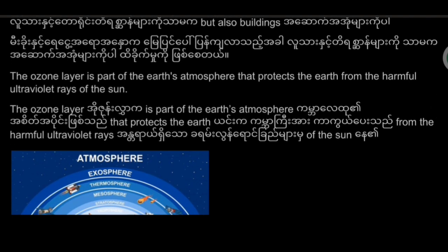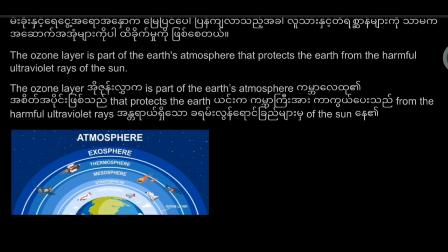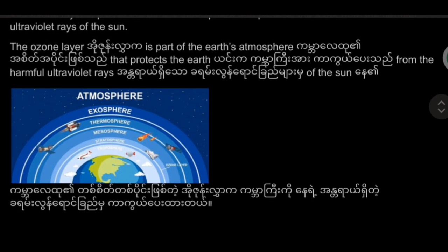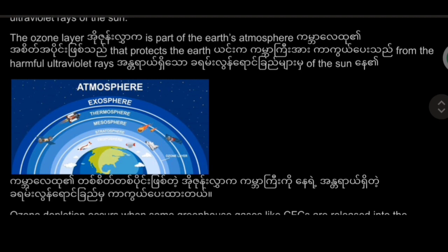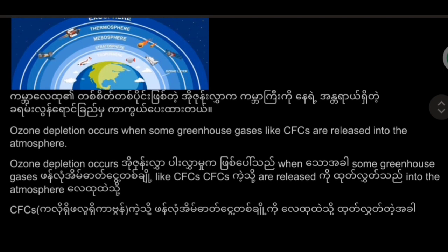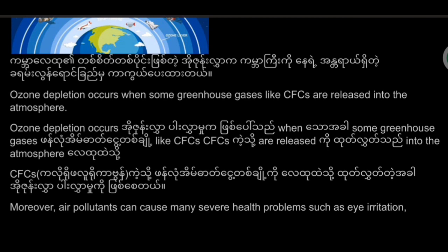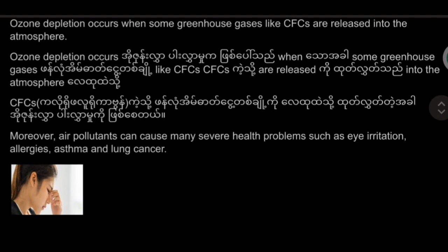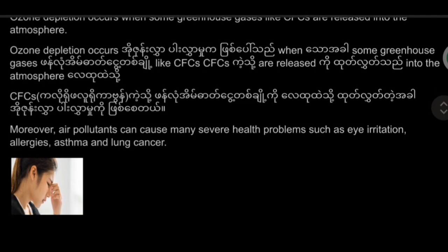The ozone layer is part of the earth's atmosphere that protects the earth from the harmful ultraviolet rays of the sun. Ozone depletion occurs when some greenhouse gases like CFCs are released into the atmosphere.